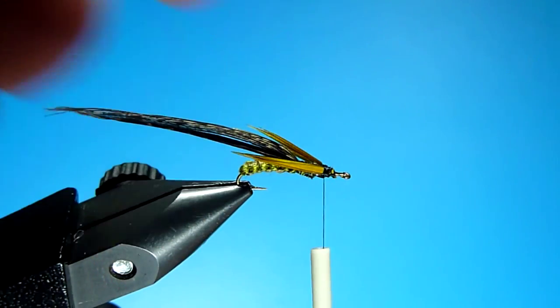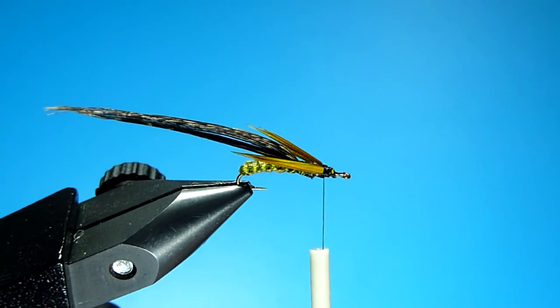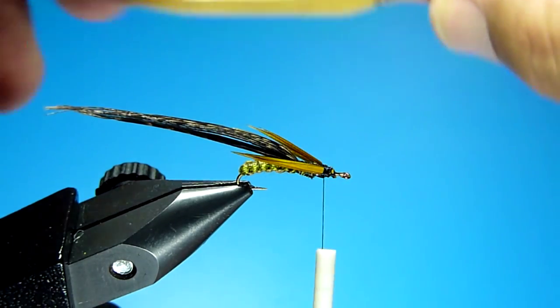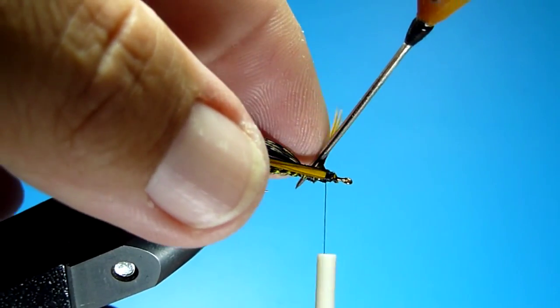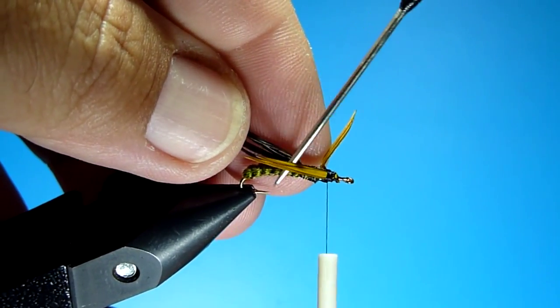I take a little bit of straw, cut it. This will be basically to hold the goose biots out of the way as you're putting on your first ball of dubbing. Otherwise they can tend to get in your way and really aggravate you. So just take your bodkin and slide the goose biots up and forward.